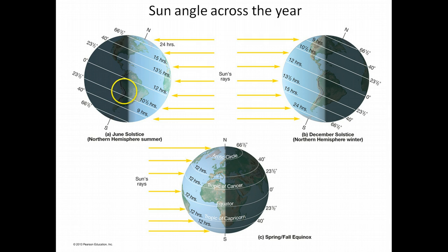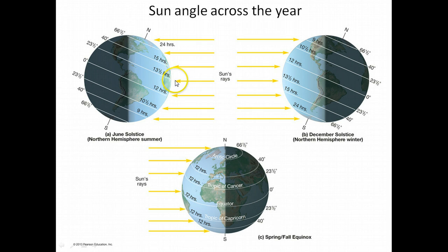On the summer solstice, or June solstice — June 21st — we'll find that the sun's vertical rays strike at 23.5 degrees north latitude. This is as far north as the sun's vertical rays travel. So on that date, anyone along that line of latitude will experience the sun directly overhead at noon.